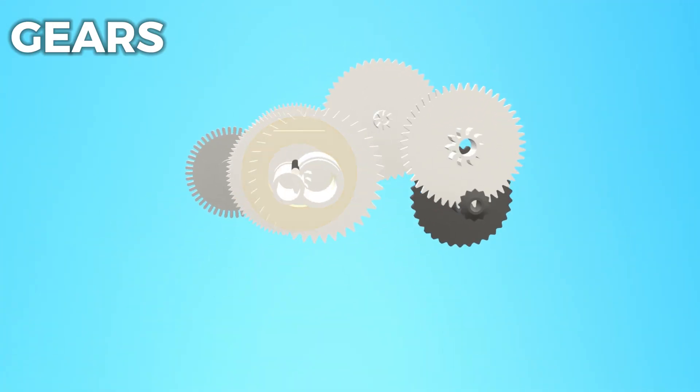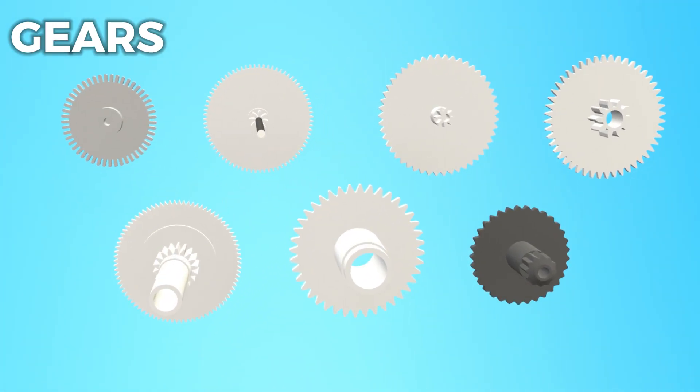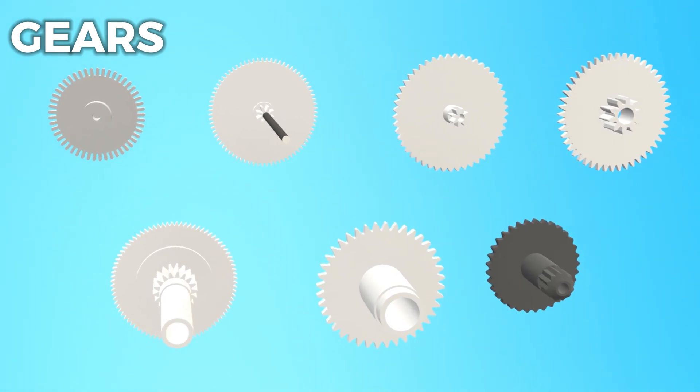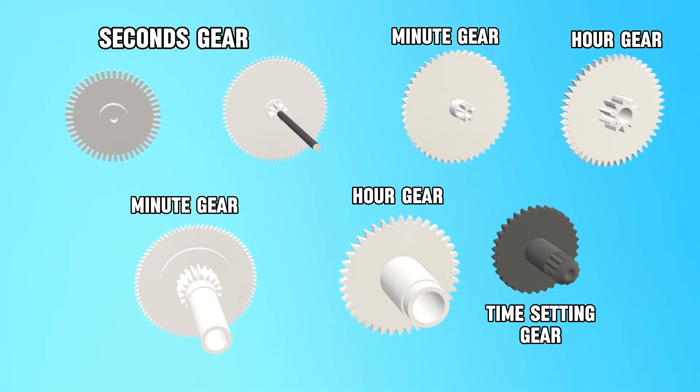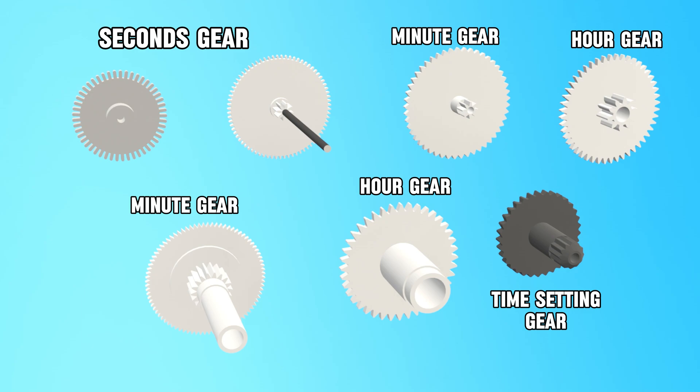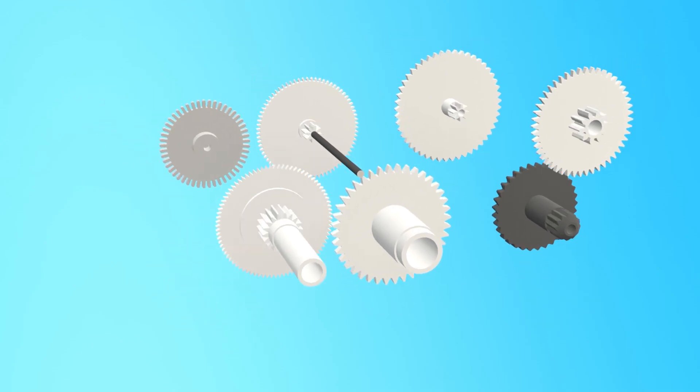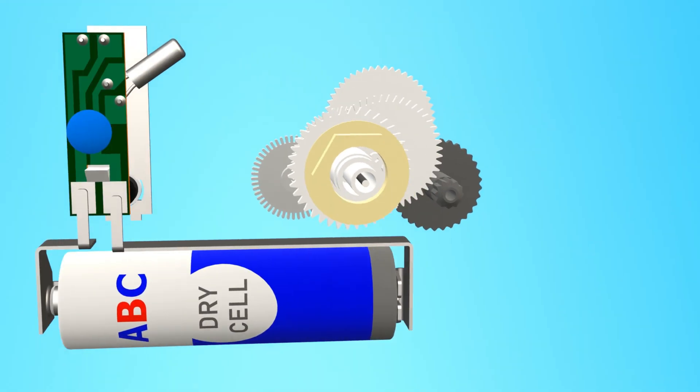The gears: The gears in a battery-operated clock translate the motor's movement into the motion of the clock hands. Different gears control the hour, minute, and second hands, ensuring they move at the correct speed. The gears are precisely engineered to ensure accurate timekeeping.